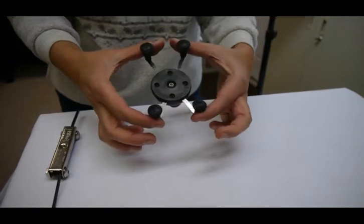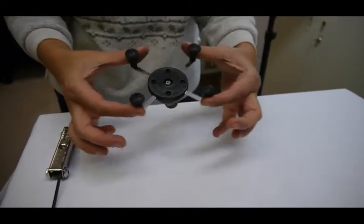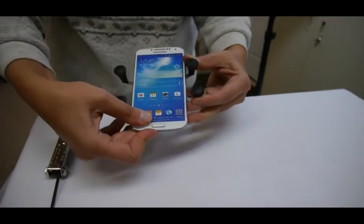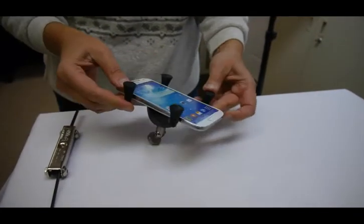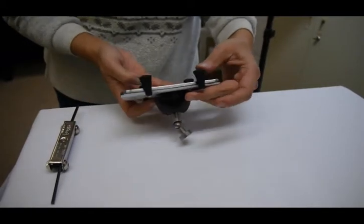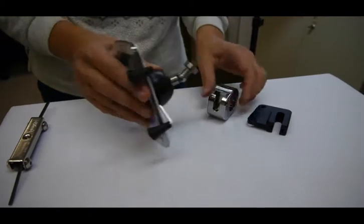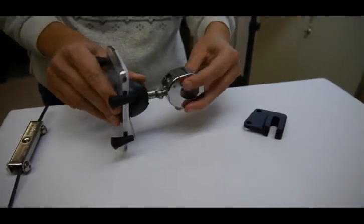The X-Grip adjusts simply by pulling on each side. You pull these sides and put your phone in. You want to make sure that the little foot holders on the outside aren't pressing on any buttons on your phone, and then you can put it in any of our mounting brackets.